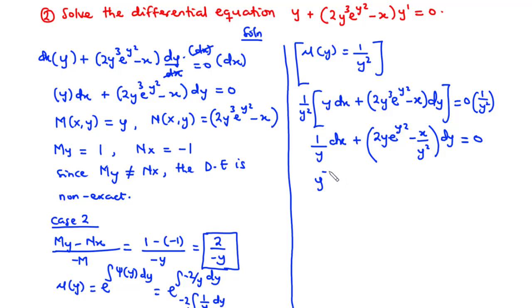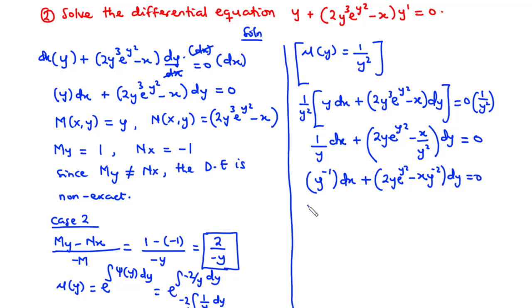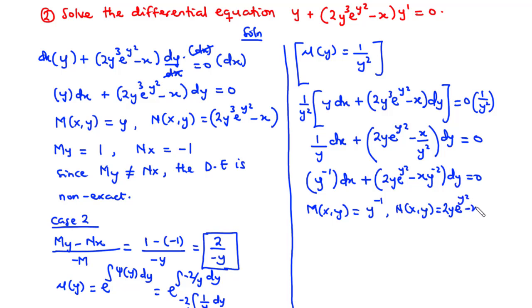We can write this as y to the power negative 1 dx plus 2y e to the power y² minus x times y to the power negative 2 dy equals 0. So our new M(x,y) equals y to the power negative 1, and our new N(x,y) equals 2y times e to the power y² minus x times y to the power negative 2.